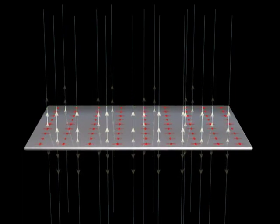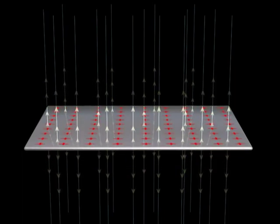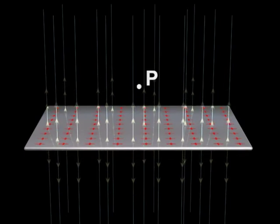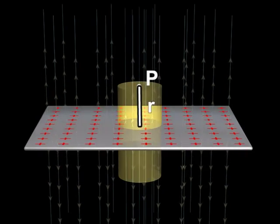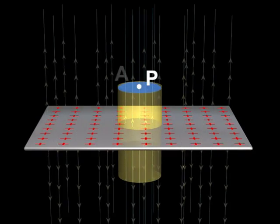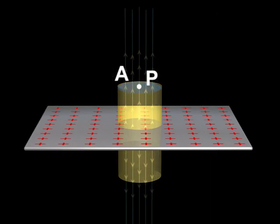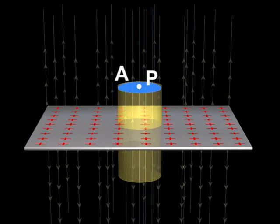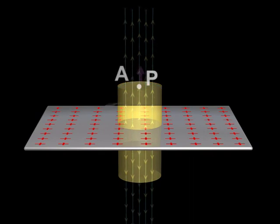For finding electric field due to the plane sheet of charge at any point P, distant R from it, consider a cylinder of cross-section area A as the Gaussian surface passing through the point P.